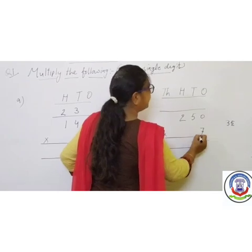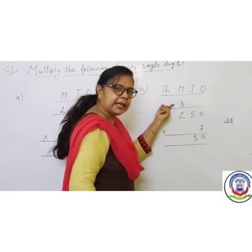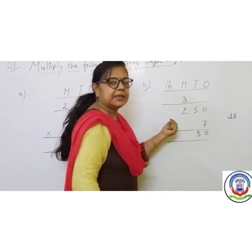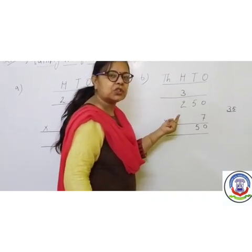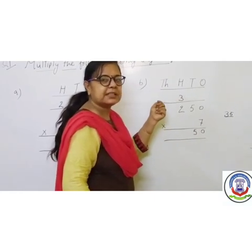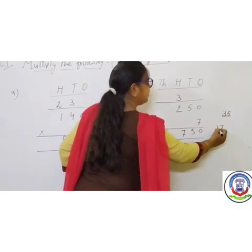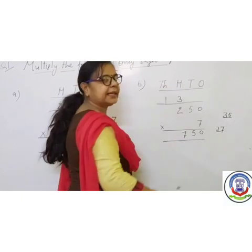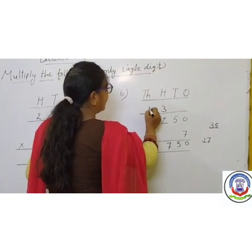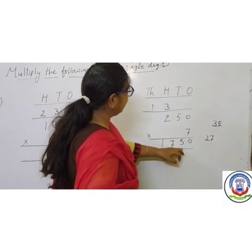Write 5 in the 10's place and carry forward 3 to the 100's place. Next, 100's place is 2: 7 multiplied by 2 — 7 twos are 14. Plus carry forward 3 equals 17. We write 7 and carry forward 1. As there is no further figure, we bring down 1. So our product is 1750.